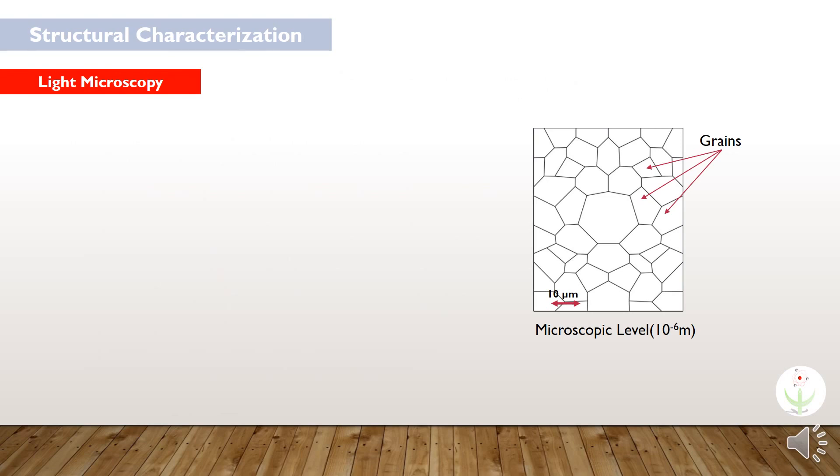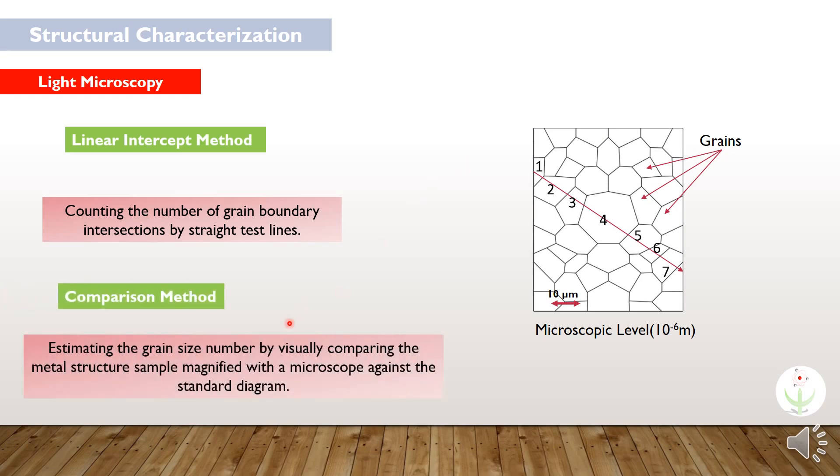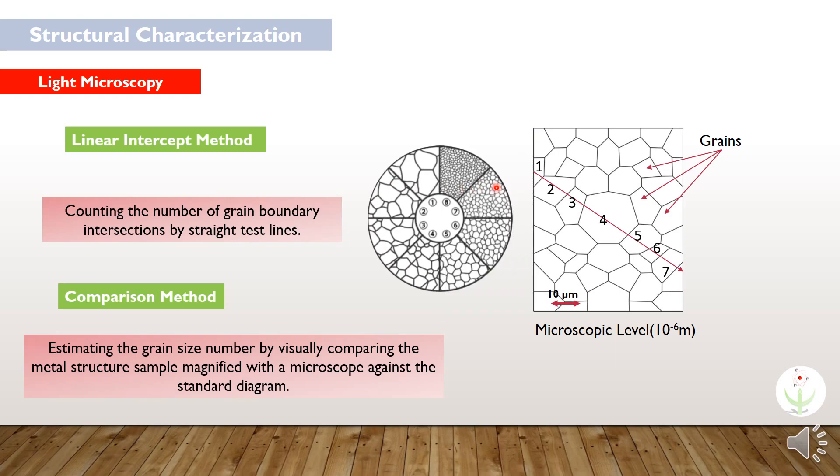We were utilizing two common techniques to find out the average grain size. One of them was linear intercept method, which is counting the number of grain boundary intersections by straight test lines. And the second one was the comparison method, which is estimating the grain size number by visually comparing the metal structure sample magnified with a microscope against the standard diagram.